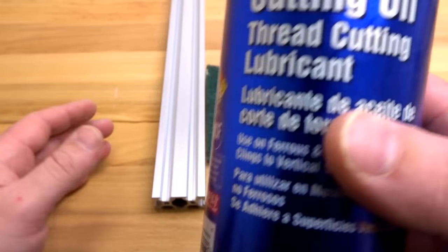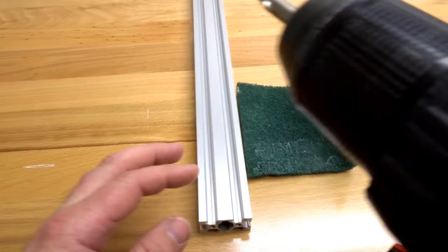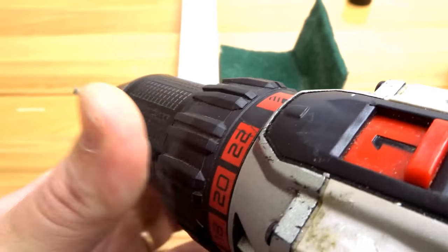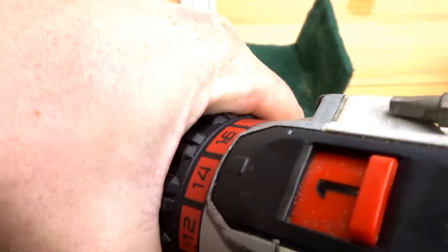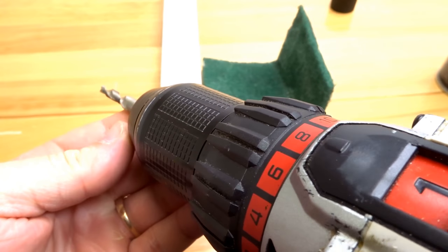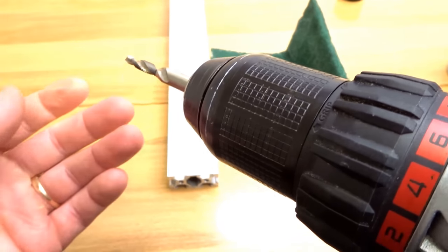Alright, so let's get started here. First I want to take a look at the settings on your drill. We want to adjust that to a lower setting to about eight, that way you don't have too much torque going into the V slot because you can snap your bit.